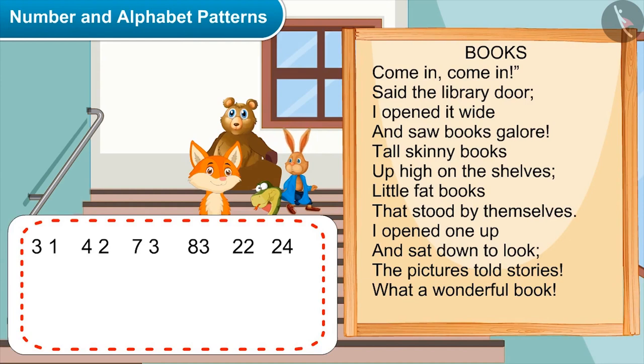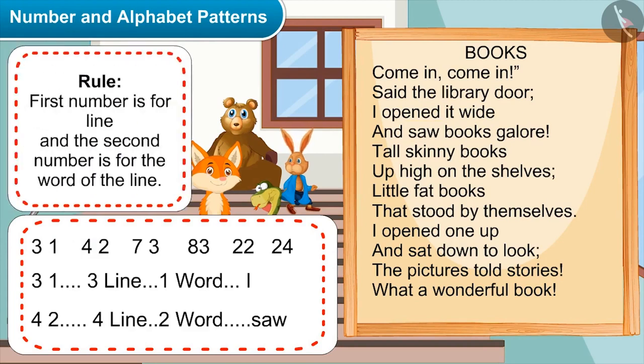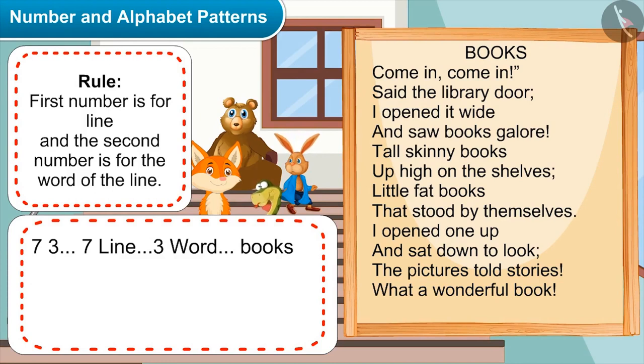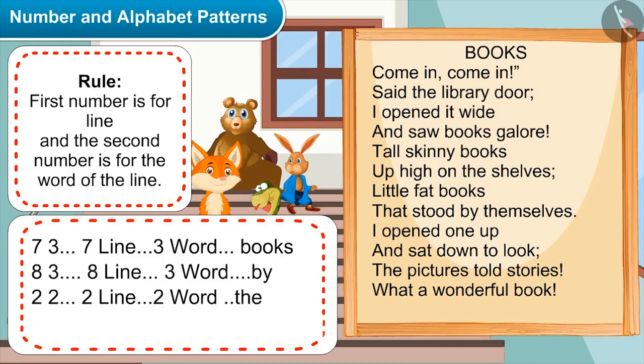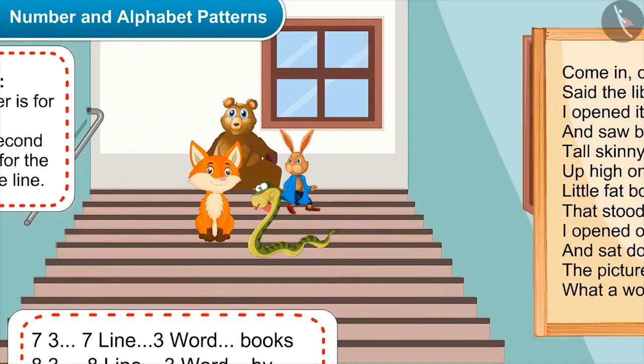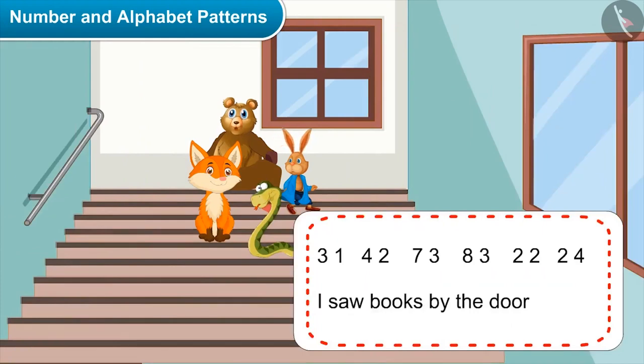Chatura, now please tell. Okay, listen carefully. First 31 means third line first word. So next 42 will mean fourth line second word. Yes, right. So the rule for this is first number is for line and the second number is for the word of the line. Yes, absolutely right. Okay, so 73 means seventh line third word. Next 83 means eighth line third word. Then we have 22 which means second line second word, and 24 means second line fourth word. Chatura, you want to say I saw books by the door.